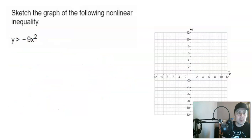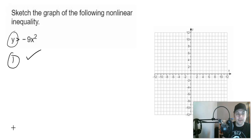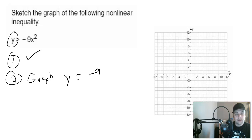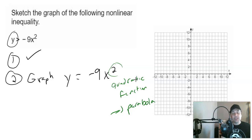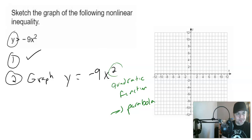Next example: y > −9x². Step one is already done — it's solved for y. Step two: graph y = −9x² as an equation. This is a quadratic function, which means the graph is a parabola. We need to think back to how we graph parabolas from chapters two and three.